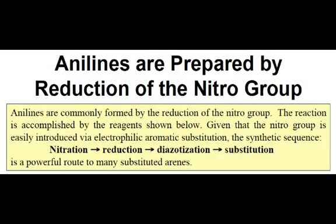The synthetic sequence that allows new substitution on an aromatic ring is first by nitrating the group and introducing a nitro group, and then reducing this nitro group to an aniline. This aniline is then converted into an aryl diazonium compound.